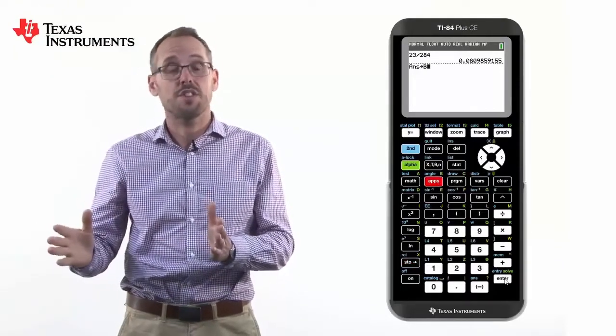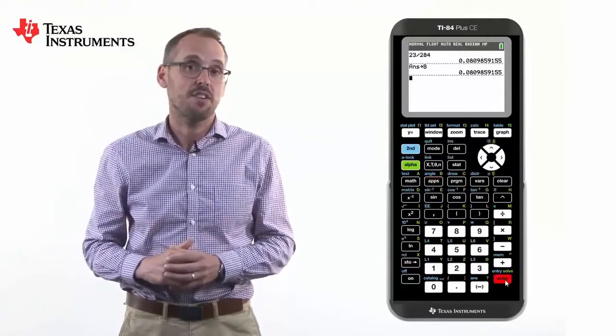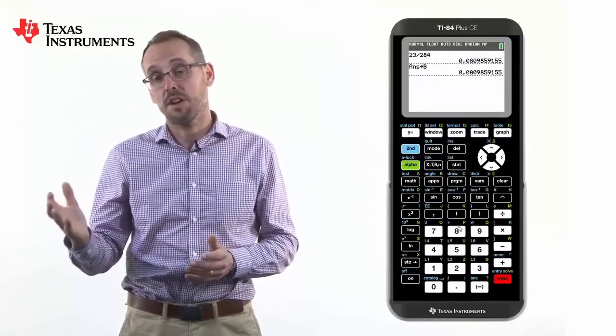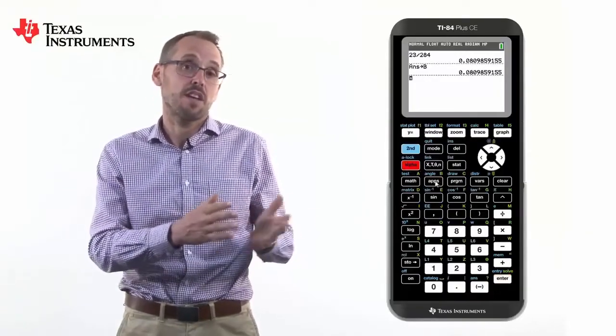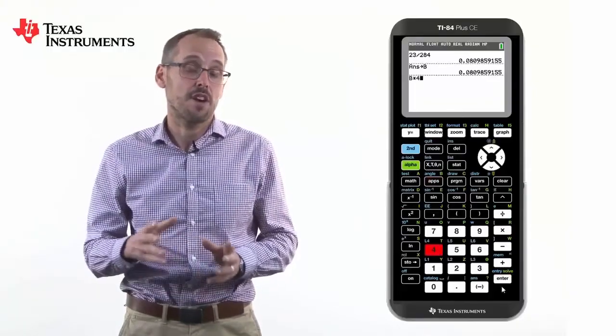That number is now stored as that variable and can be used in later calculations. For example, if we want to times it by 4, the answer now is 4 times as big as the variable it was before.